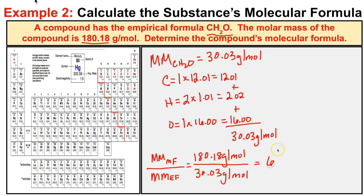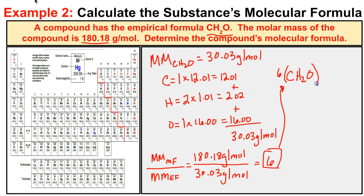Now we take the molar mass of the molecular formula — 180.18 grams per mole — and divide it by the molar mass of the empirical formula — 30.03 grams per mole. This gives us the magic number of 6. We distribute this 6 throughout the empirical formula CH2O, and we end up with C6H12O6 as our final molecular formula for this compound.